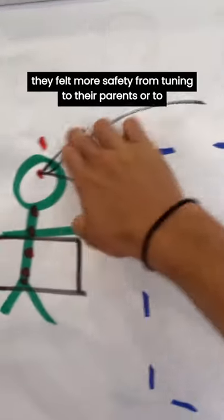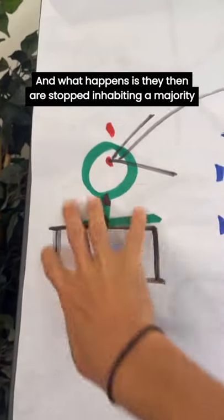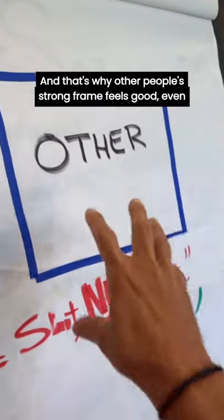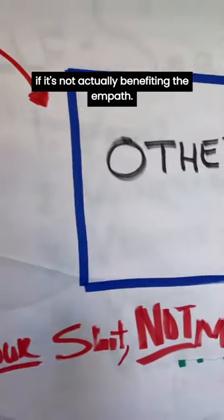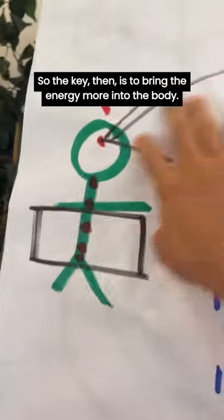What happens is they then stop inhabiting a majority of being present in their body, so they feel safety from other people. That's why other people's strong frame feels good, even if it's not actually benefiting the empath. So the key then is to bring the energy more into the body.